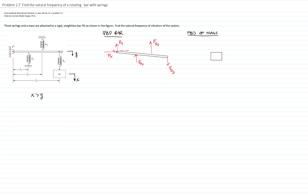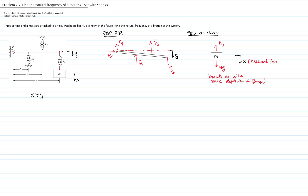I will call this displacement Y and the displacement of the mass X. Now let's do the free body diagram of mass M. I have the force of the spring — by action and reaction, it goes in the opposite direction — and I have the weight of the mass. The static deflection of the system will cancel out with the weight because the weight is a constant force. So I will not include the weight in my motion analysis, since X is measured from the static equilibrium position.